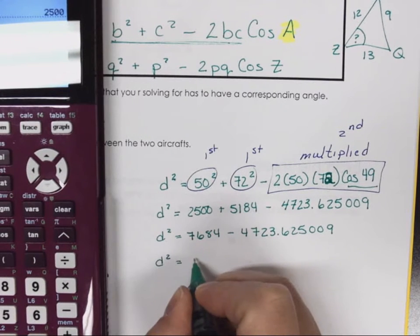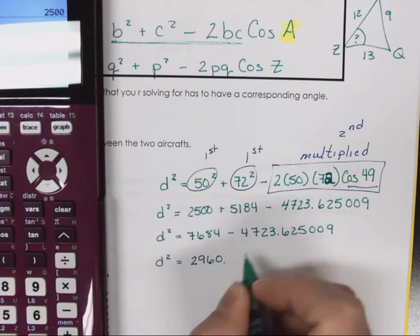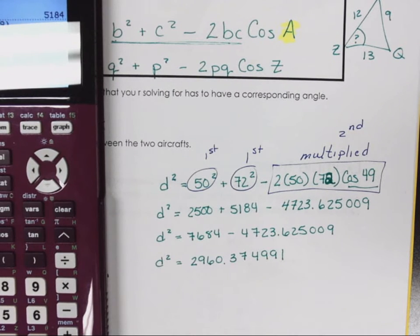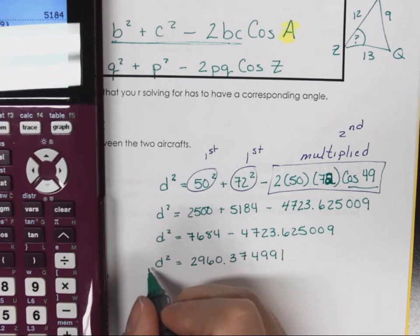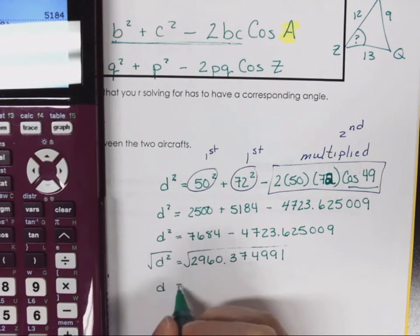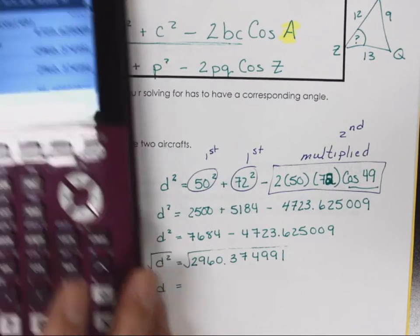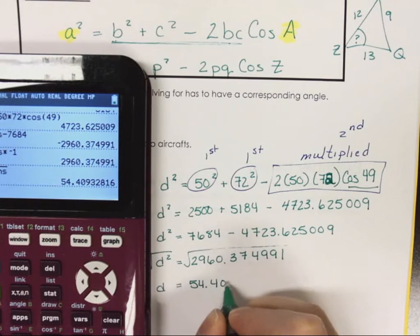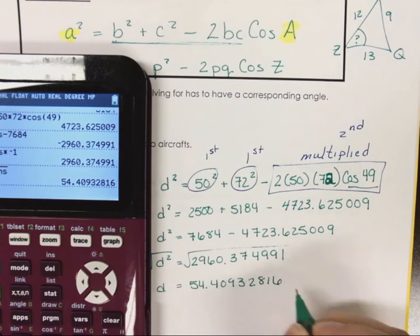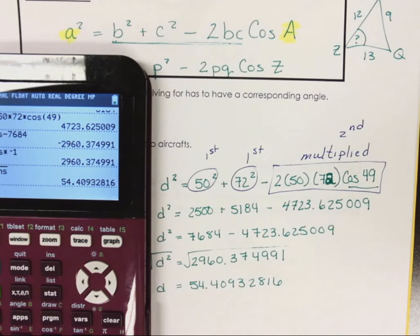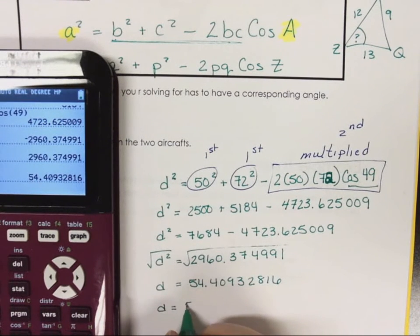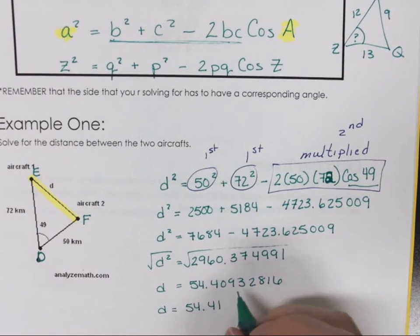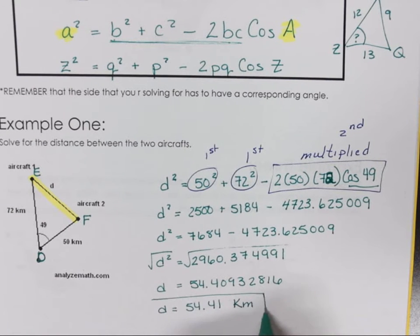I'm going to add these together. 7,684 minus 4,723.625009. If I subtract those, I'm going to get 2,960.374991. I'm going to square root both sides because I don't want d squared, I just want d. So d equals 54.40932816.